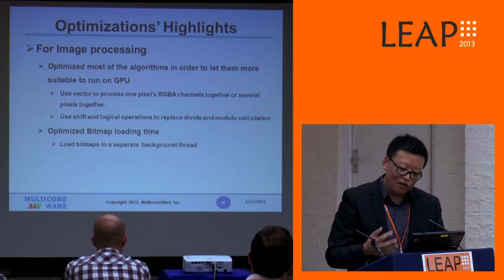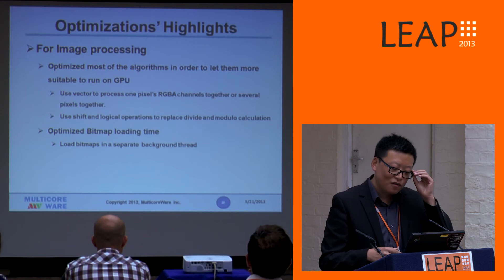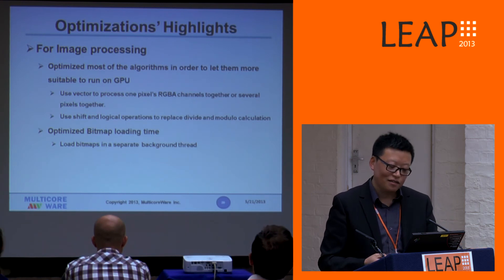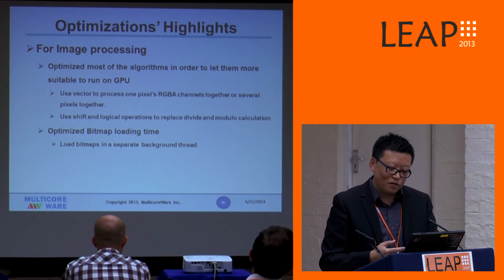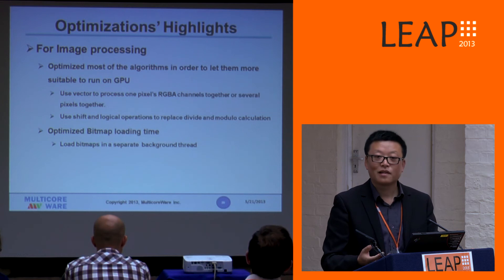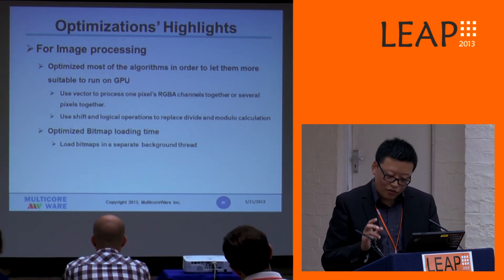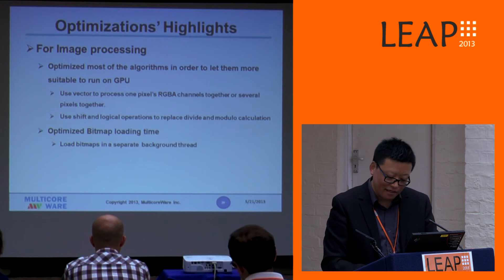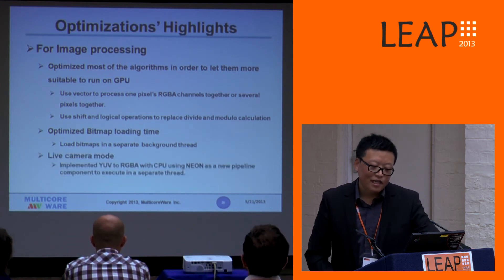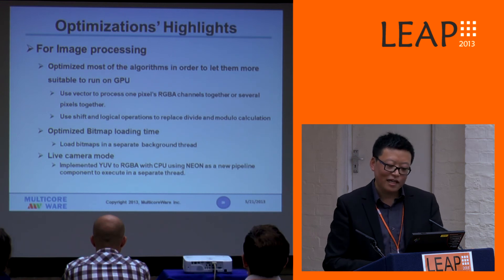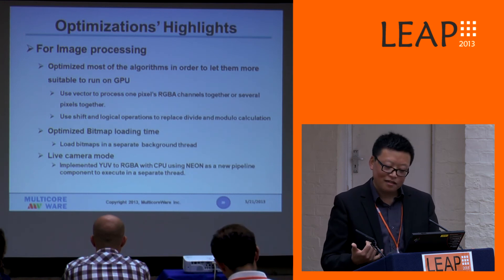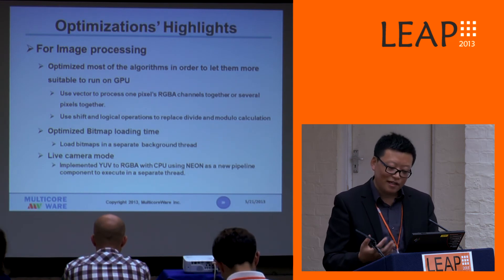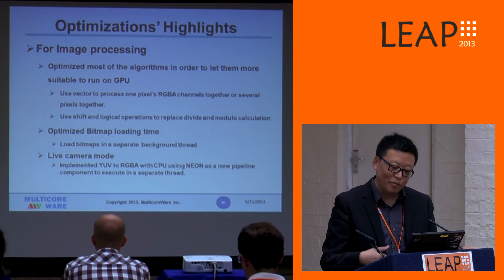For video transcode, there are some additional complications, like bitmap loading. In our optimization, we put bitmap loading into a separate background thread to hide latency. Also worth mentioning: for the live camera mode, we implement the YUV to RGBA color space conversion on the CPU using NEON, also as a separate pipeline component, to allow parallel execution.